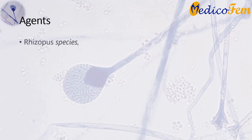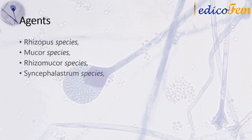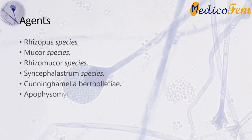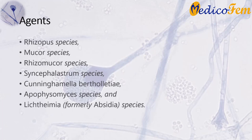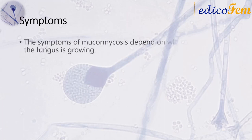The fungal agents causing mucormycosis include Rhizopus species, Mucor species, Rhizomucus species, Syncephalostrum species, Cunninghamella bertholletiae, Apophysomyces species, and Lichtheimia (formerly Absidia) species. The symptoms of mucormycosis depend on where in the body the fungus is growing.